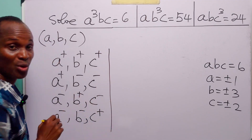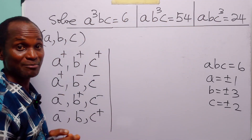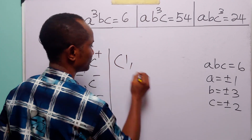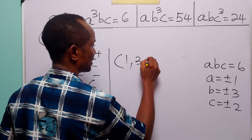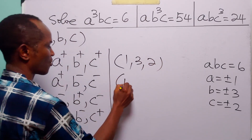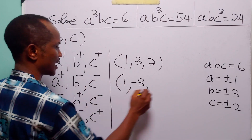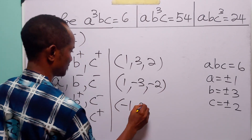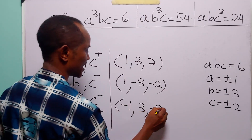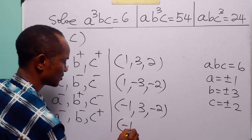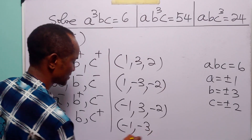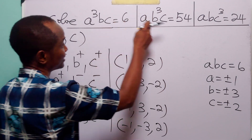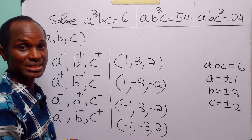So the four points that satisfy these three equations simultaneously are: (1, 3, 2), (1, −3, −2), (−1, 3, −2), and (−1, −3, 2). These are the four points that satisfy these three equations simultaneously.